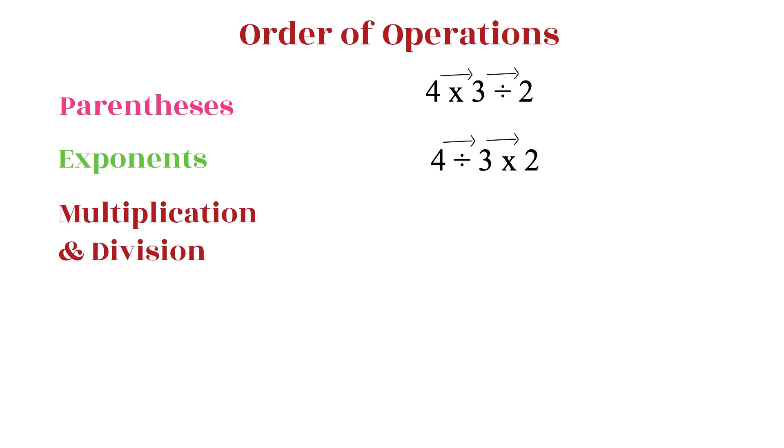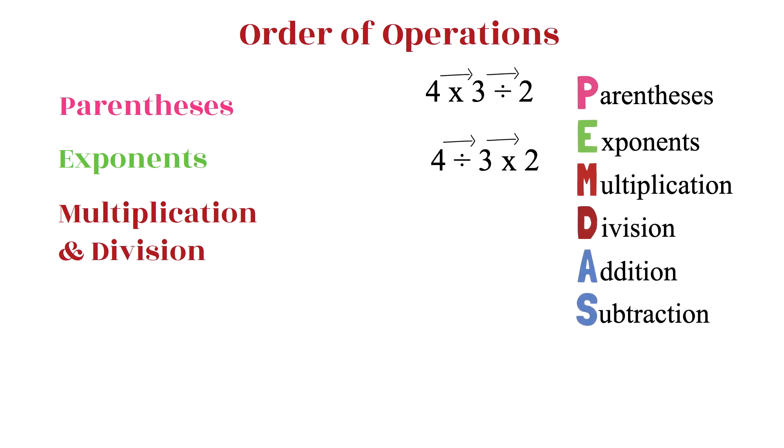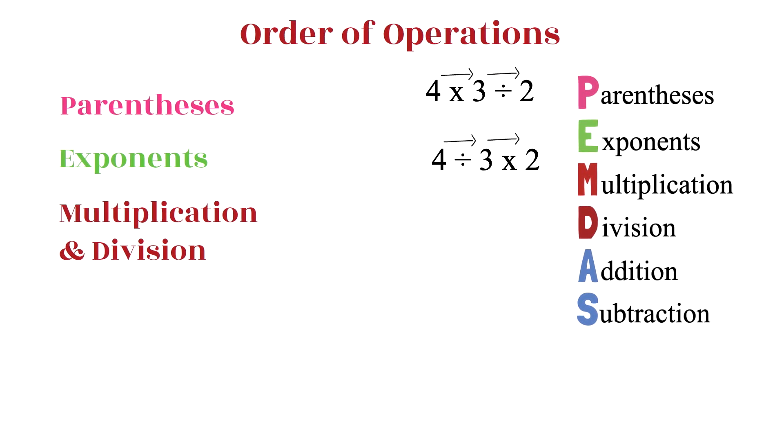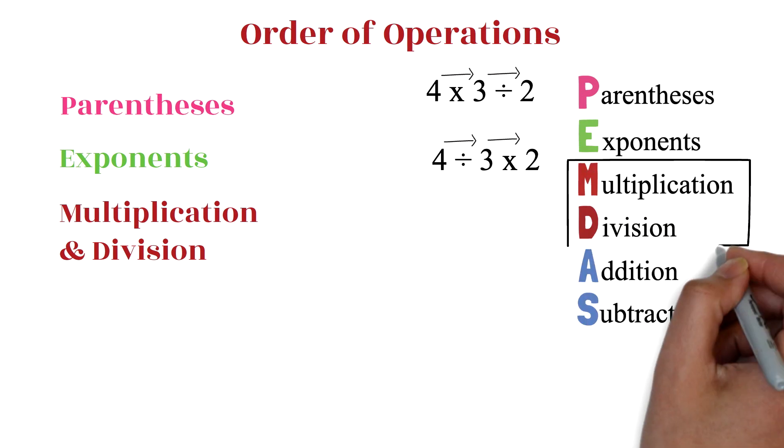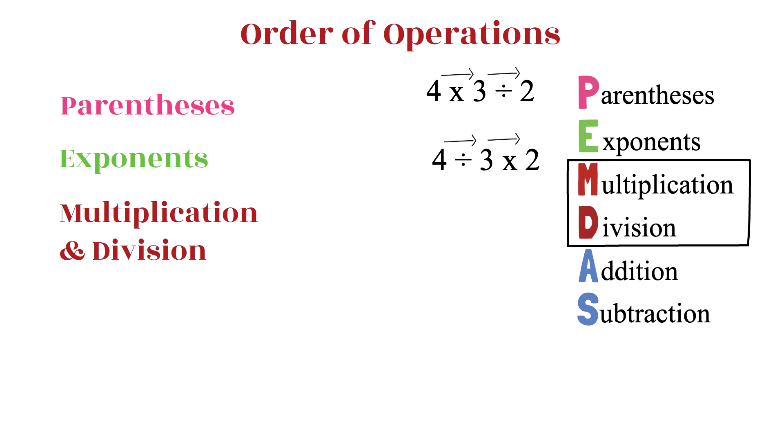I know a lot of students are stuck on PEMDAS, so they assume multiplication operations are always done before division operation. But that's not the case. Multiplication and division are on the same level. You work it out from left to right.